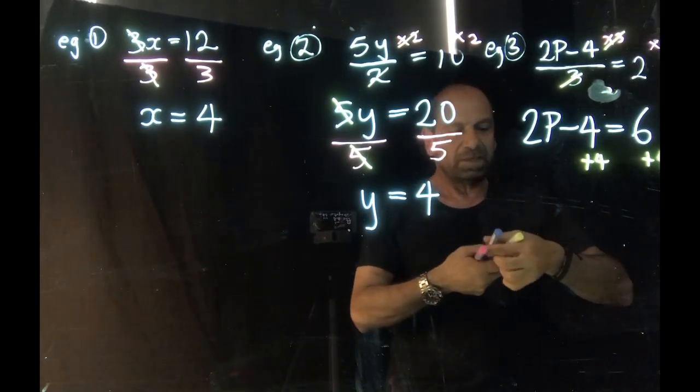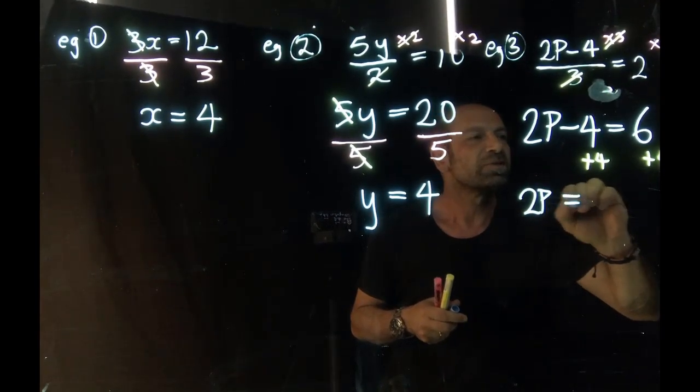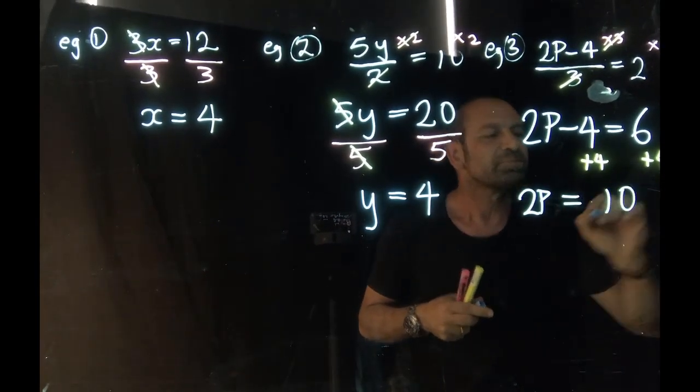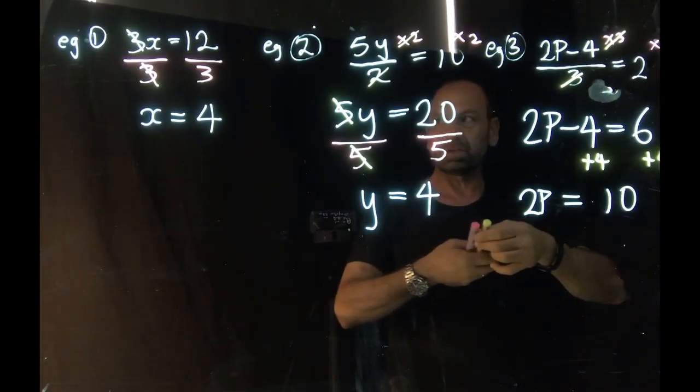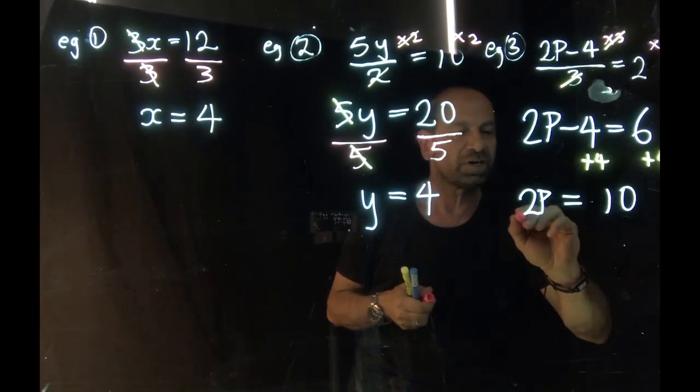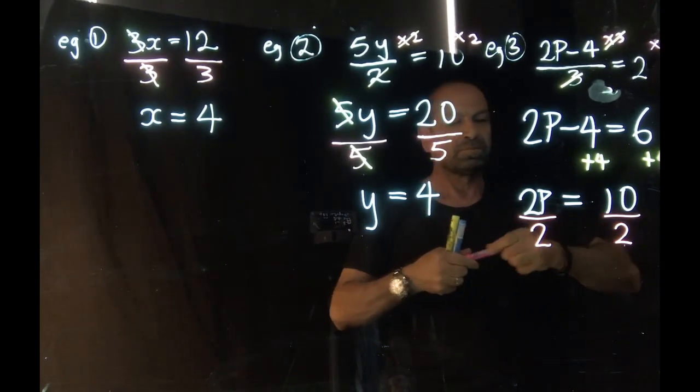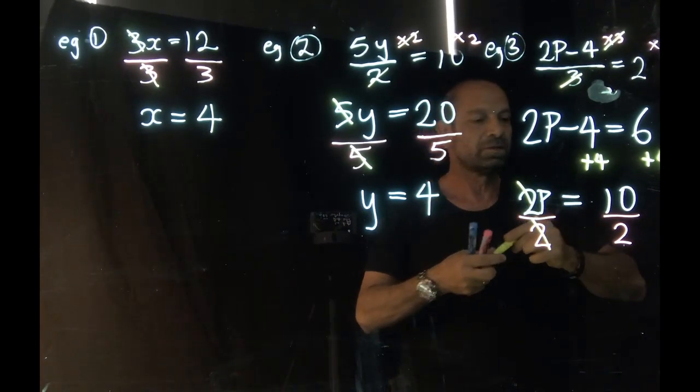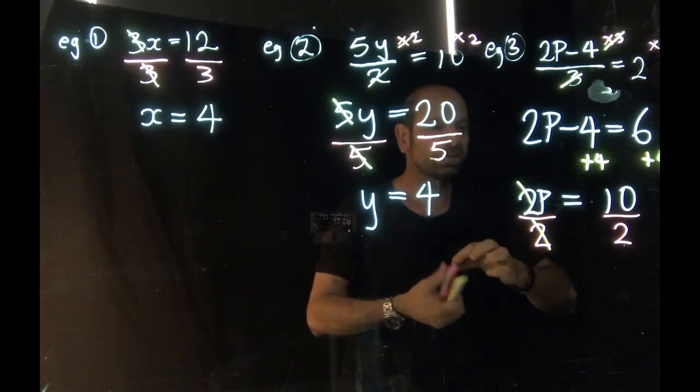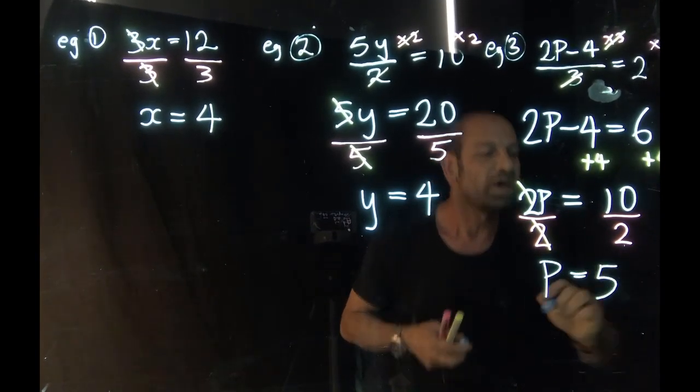That will mean that we will be left with 2p equals to 10. And again, this looks like the very first example. So at this point, we're going to divide both sides by 2, canceling out, leaving us finally with p equals to 5.